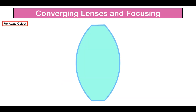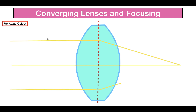I'd like to begin by talking about how converging lenses focus light. If we have a converging lens and an object that is really far away, the light rays reflected off the object come into the lens largely parallel to each other. When they enter the lens they slow down and refract to a point where all the light rays converge. The more parallel the rays, the easier it is for the lens to focus them to a certain point.